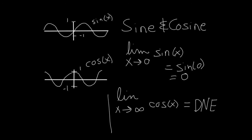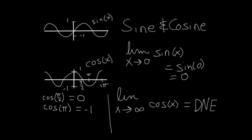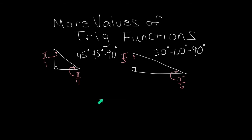Some important values of sine and cosine: cosine of pi over two. One full oscillation is two pi, half is pi, and half of that is pi over two — so cosine of pi over two equals zero, which you can also get from the unit circle. Cosine of pi equals negative one, as seen on the cosine graph.